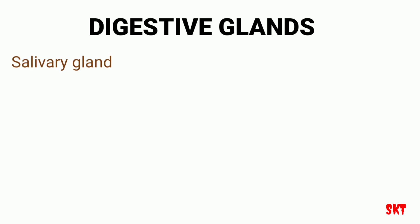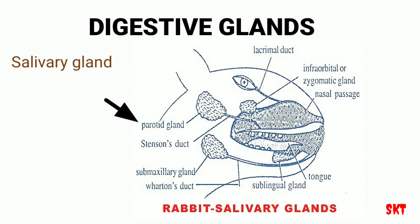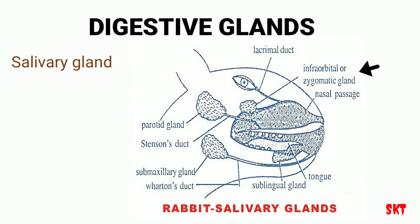The salivary glands are of four pairs. The first is the parotid glands, present below the external auditory canal. The next is the sublingual glands, which lie under the tongue. The third is the submaxillary glands, which open in front of the tongue near the lower incisors. The last is the infraorbital glands, which lie below the eyes. All these salivary glands secrete mucin or a watery solution containing enzymes which help in the digestion of food.